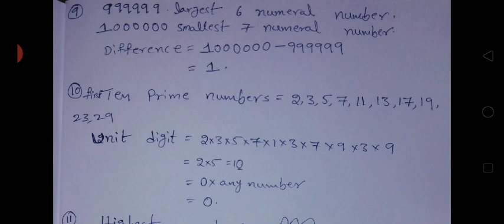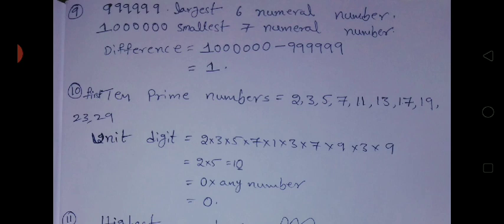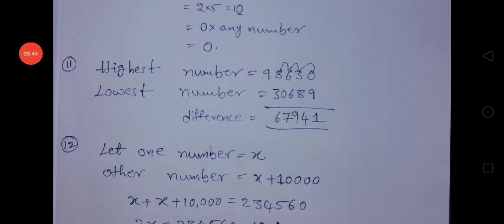Next question: What is the unit digit of the product of the first 10 prime numbers? We already discussed that for unit digit of multiplication, we take only the units place digits and multiply them. The first 10 prime numbers are 2, 3, 5, 7, 11, 13, 17, 19, 23, 29. Among these, 2 into 5 equals 10, so the units digit becomes 0. Zero multiplied by any number gives 0, so the unit digit of the product of the first 10 prime numbers is 0.